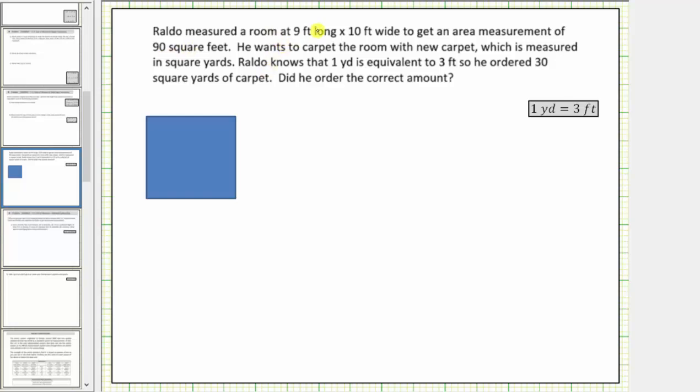Roldo measured a room at nine feet long by ten feet wide to get an area measurement of ninety square feet. He wants to carpet the room with new carpet which is measured in square yards. Roldo knows that one yard is equivalent to three feet, so he ordered thirty square yards of carpet. Did he order the correct amount?